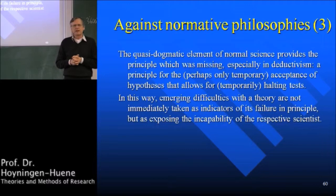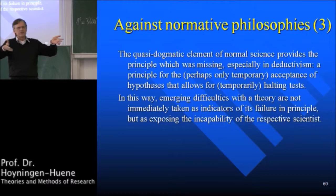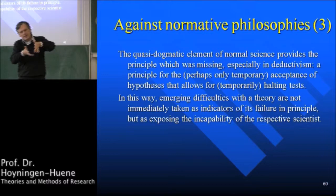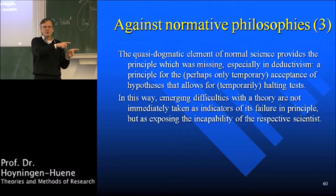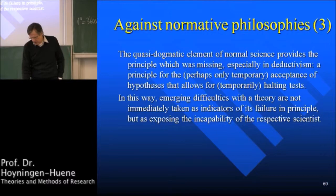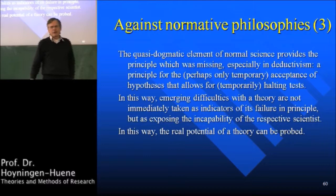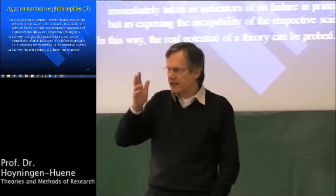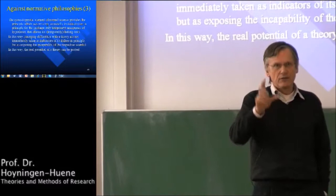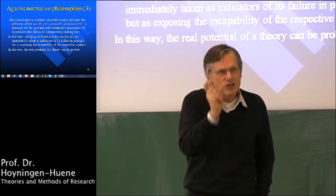That is what normal science licenses you to do — it says once you have reached the stage of normal science, you are allowed to stop testing and it's reasonable to do so. Why? Because once you encounter difficulties with your theory, they are not immediately taken as indicators of its failure in principle but as exposing the incapability of the respective scientist. When you have anomalies in normal science — a problem you couldn't solve — it's not immediately channeled toward the guiding theory as a disaster; rather, you say this scientist cannot solve the problem, it's not a problem of the theory. Darwin discovered this problem of the sex ratio — the one-to-one ratio between the sexes in biological species — and Darwin said he cannot solve the problem.